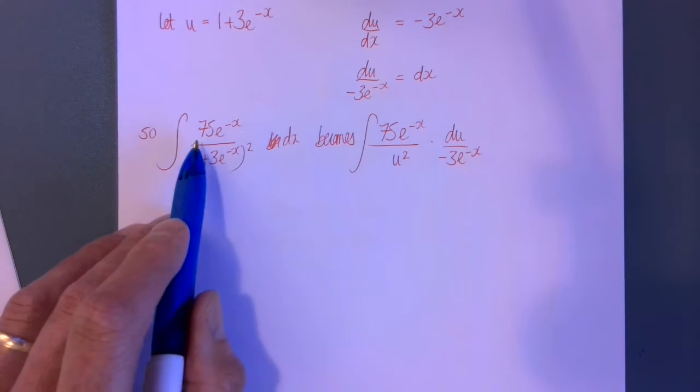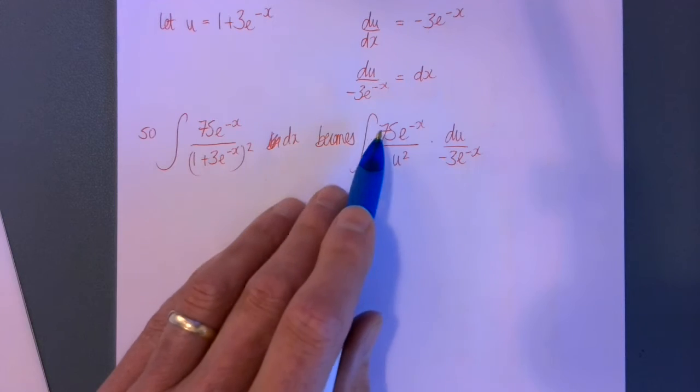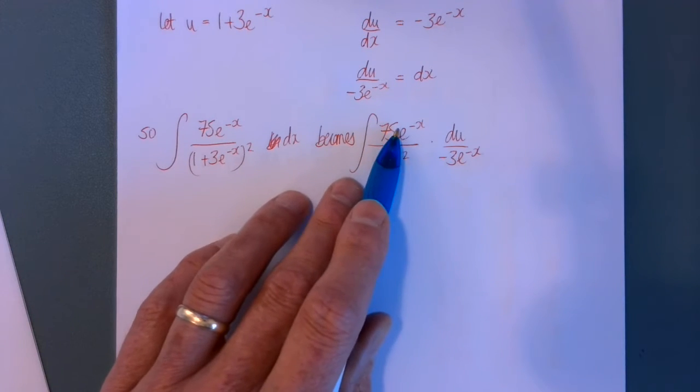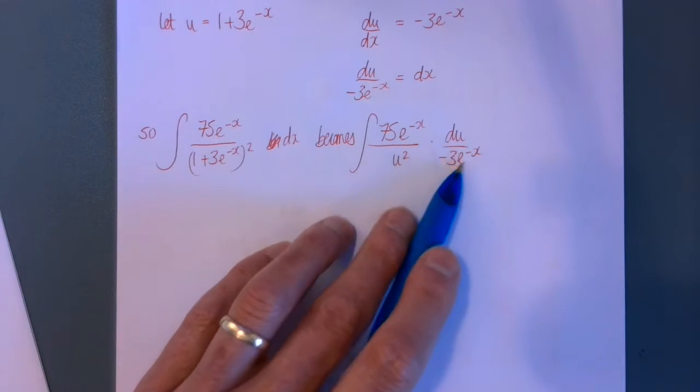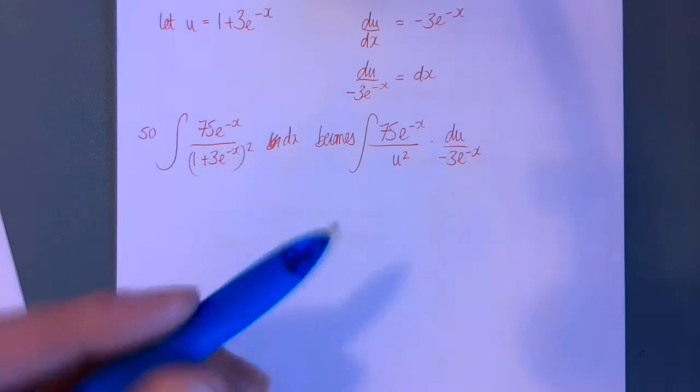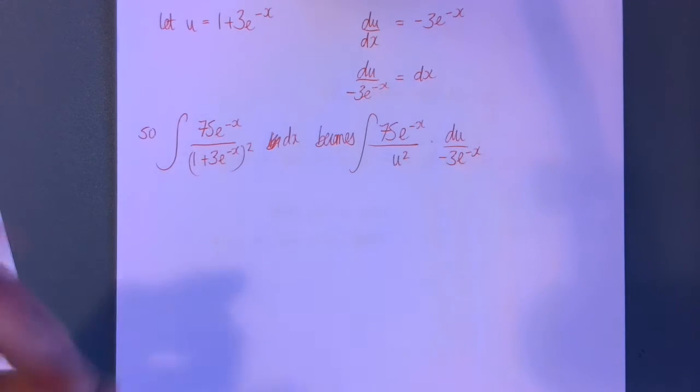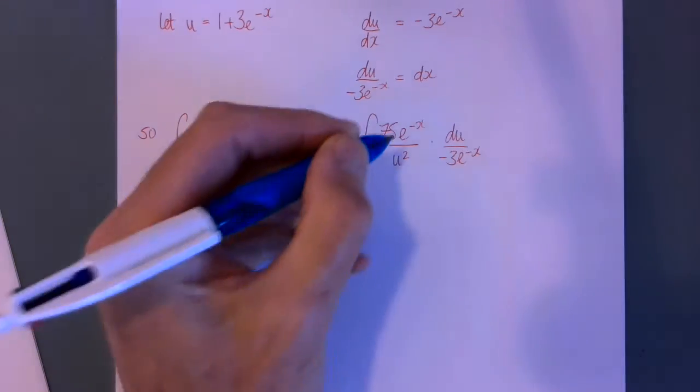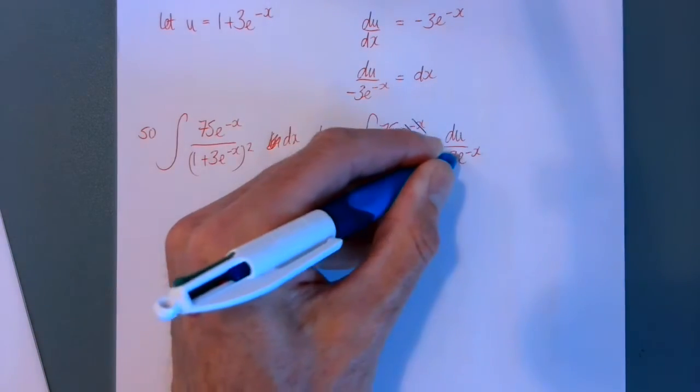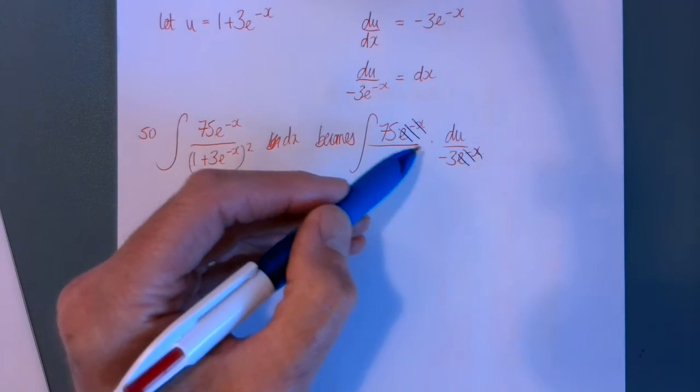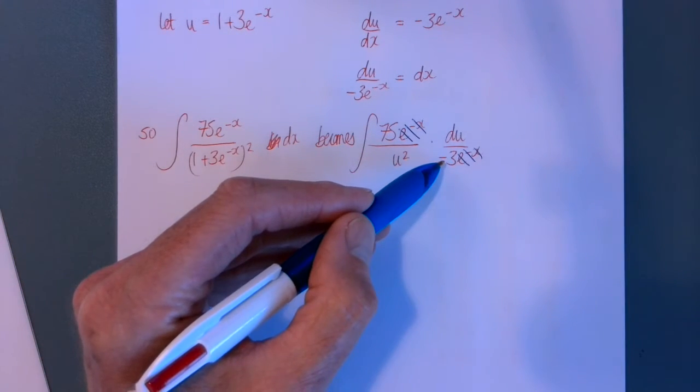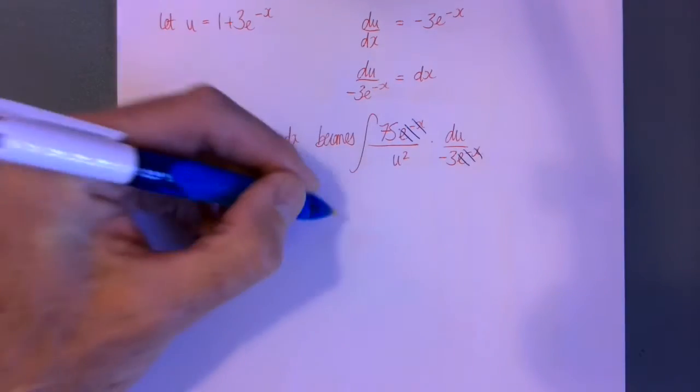So that becomes, well I leave that there you'll see why I've left that there in a minute, but this becomes u squared and dx becomes this. That's what I've just worked out. Now you'll see why I left the 75 e to the minus x, because I can now cancel out e to the minus x.